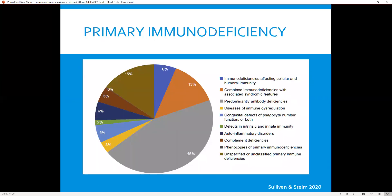As we all know, primary immunodeficiency comprises a wide range of different inborn errors and acquired errors of primary immunodeficiency. These can affect the humoral components, the T-cell or cellular components, as well as the innate forms of the immune system, including complement, TLRs, and some of the more innate cells such as NK cells, neutrophils, and others.